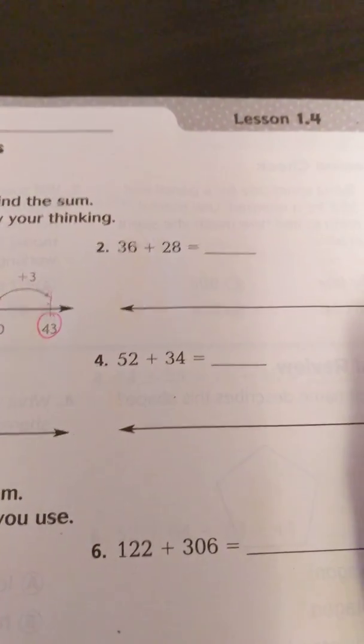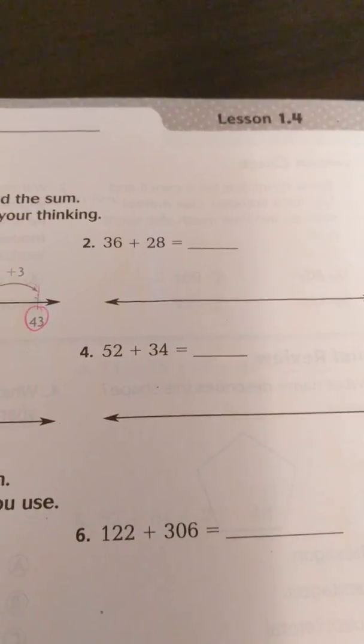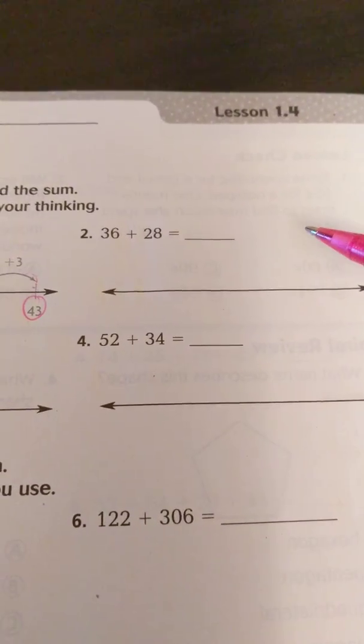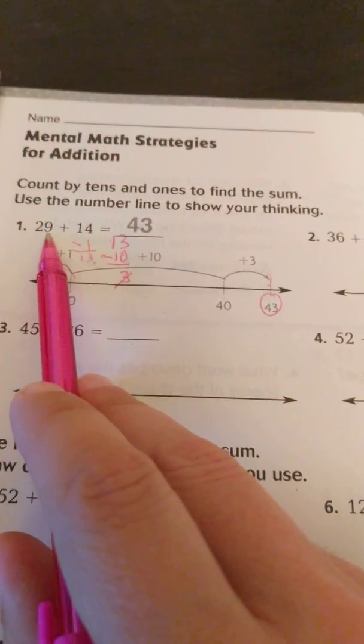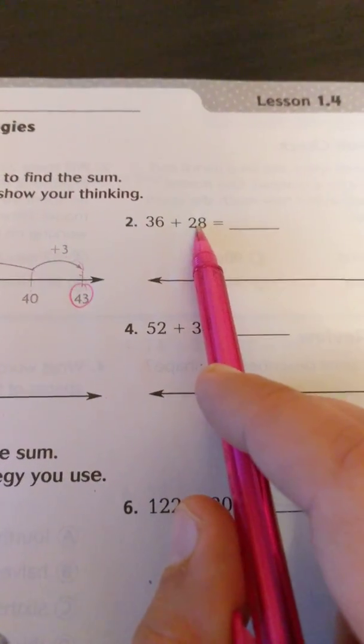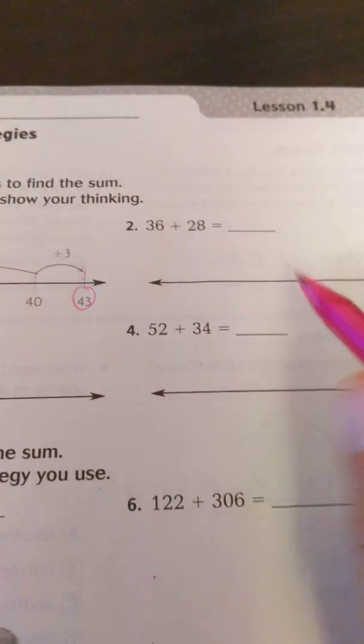So if you look over here on number 2, we have 36 plus 28. Now you don't necessarily have to start with one number or the other, whichever ones work best for you. But I like to start with the numbers that, like in this example, where 29 is closest to the next compatible number than, let's say, 14. 28 is closer to a compatible number of 30 than 36.